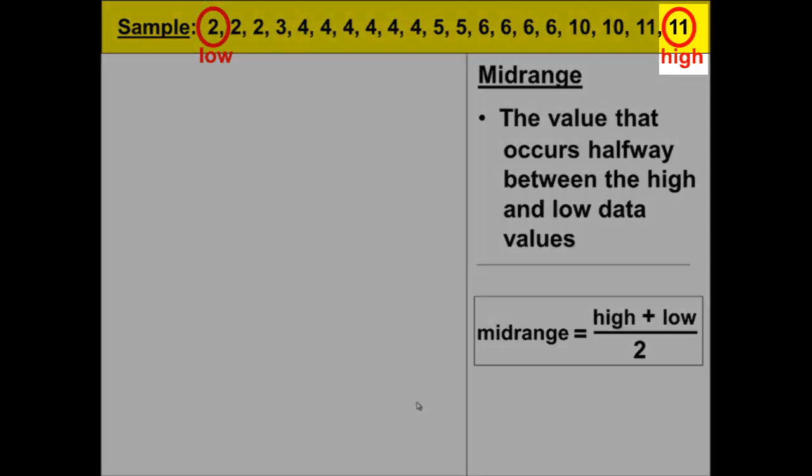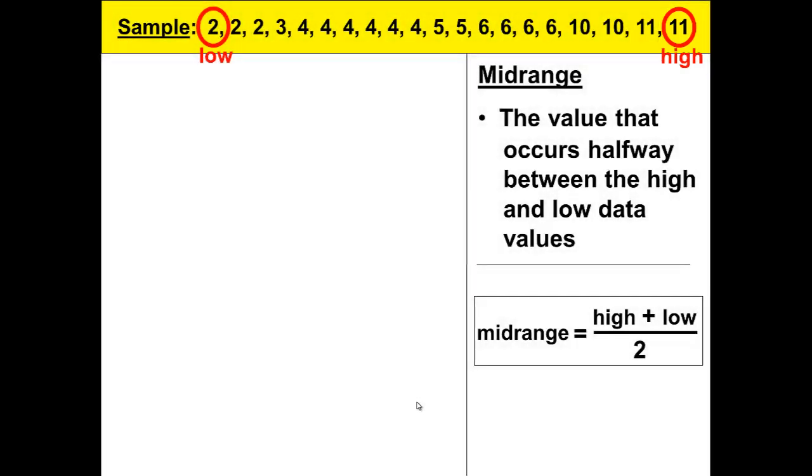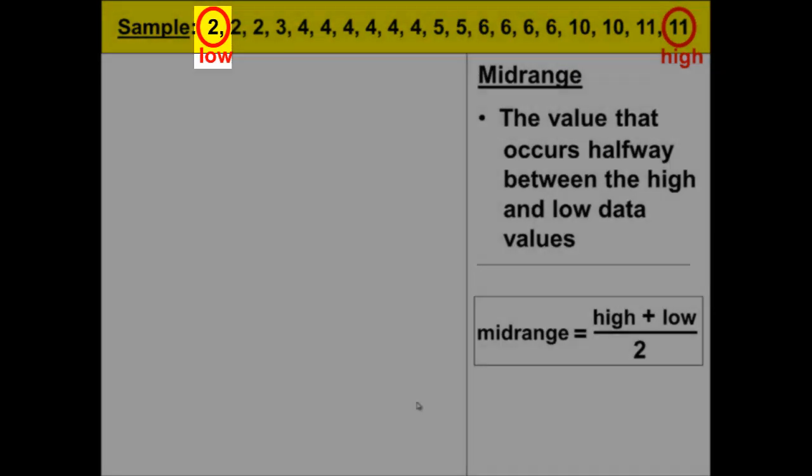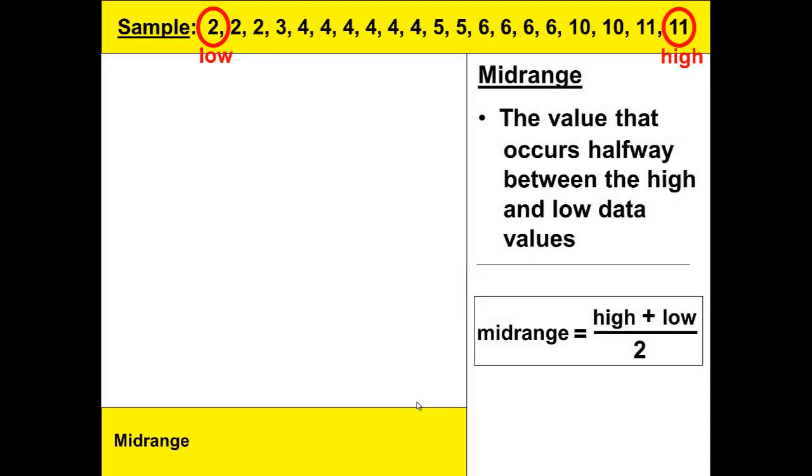Our high number is 11. Our low number is 2. So our midrange will be 11 plus 2, which gives us 13, divided by 2, which gives us 6.5. Please pay attention to the order of operations.